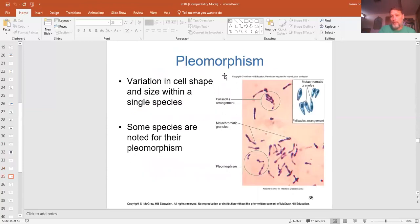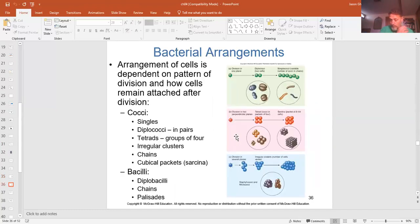Again, pleomorphism, this is where the shape will vary. So you're seeing these here varying shapes. Certain bacteria are that way. And here's another arrangement of palisade arrangement, which is what we're getting to now, is arrangement. So an individual cell will be a coccus, bacillus, or spirilla. A group of cells could be, is what we're talking about now.